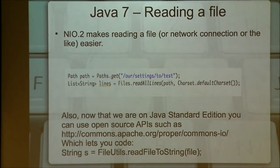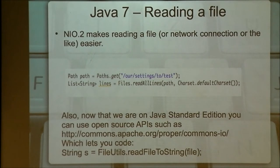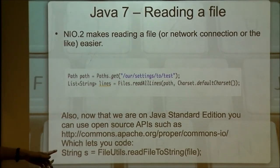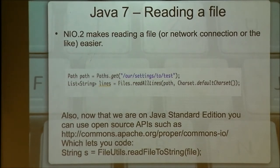Using a file in FRC programming is a good idea because it lets you change your code quickly without having to reload the entire program, and externalize some of the values. Now that we're on real Java, we get to use open source libraries that work on real Java and didn't work on Micro Edition. One of my favorites is Apache Commons I/O. It can read a file object to a string — that's short and hard to get wrong.